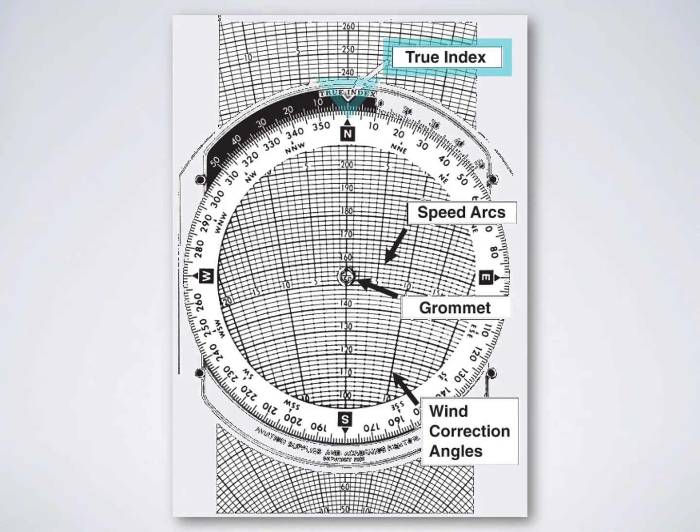Some quick terminology: the true index triangle lies at the top of the E6B, the speed arcs are the lines that run horizontally, the grommet lies in the middle, and the wind correction angles are the lines running vertically.